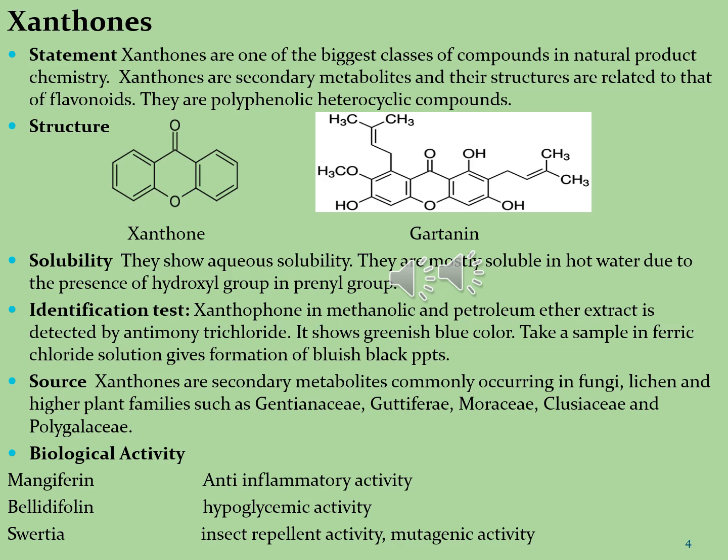The second molecule is gratinine. Gratinine is found in the plant Garcinia mangostana, and it is used in apoptosis and the growth inhibition of human urinary bladder cancer cell lines. Xanthones are soluble in water and are mostly soluble in hot water due to the presence of hydroxyl groups in the phenyl group.